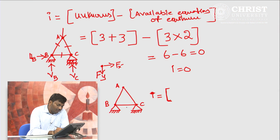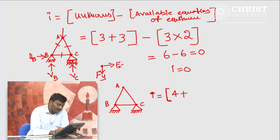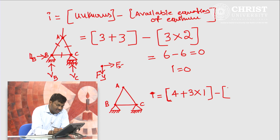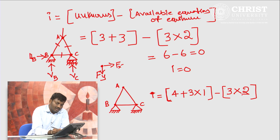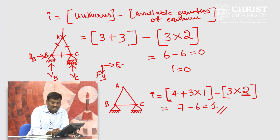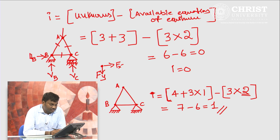What is the static indeterminacy of this? There are four unknown support reactions plus three members. In each member there is one unknown axial force, minus how many joints? We have three joints — A, B, and C — and in each joint we can write two equations of equilibrium. Therefore: 4 + 3 = 7 minus 6 equals 1. That is, 1 is the degree of static indeterminacy of this pin jointed frame with two hinge supports at B and C. So this is a statically indeterminate but stable structure.